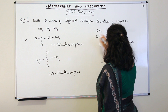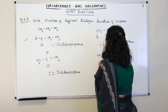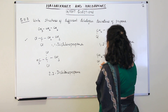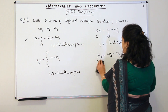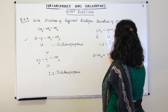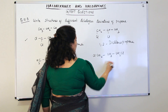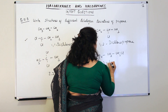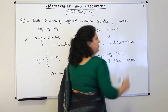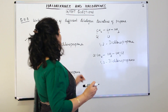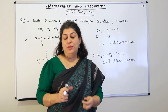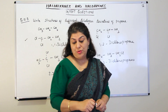The next isomer is 1,3-substitution: ClCH₂–CH₂–CH₂Cl, which is 1,3-dichloropropane. So these are the maximum number of dihalogen derivatives you can get from propane: 1,1-dichloropropane, 2,2-dichloropropane, 1,2-dichloropropane, and 1,3-dichloropropane. That was question 10.3.